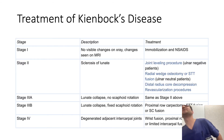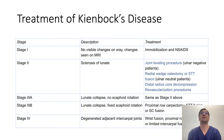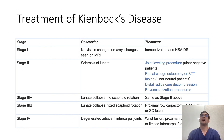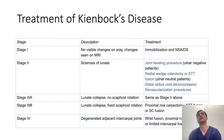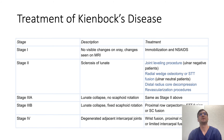Treatment of Kienböck's disease is relative to the stage identified on imaging. If caught early on MRI, the recommended treatment is immobilization and NSAIDs, for somewhere between three and six months. It is up in the air as to whether this actually halts disease progression, because it's dependent on the precipitating factors in the patient. If they have significant negative ulnar variance, there's a fair chance they may go on to develop progressive disease regardless.